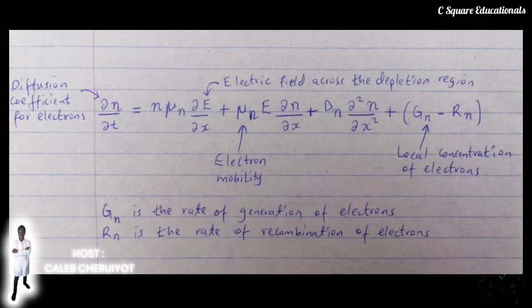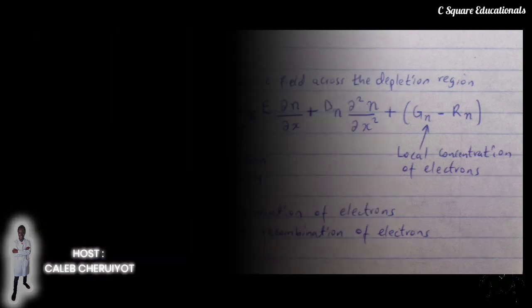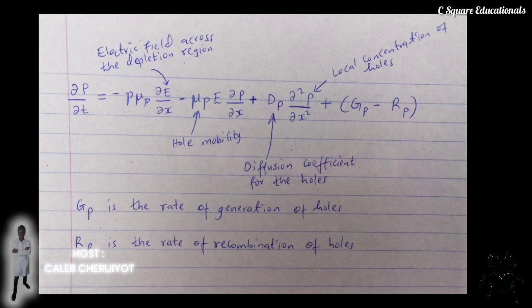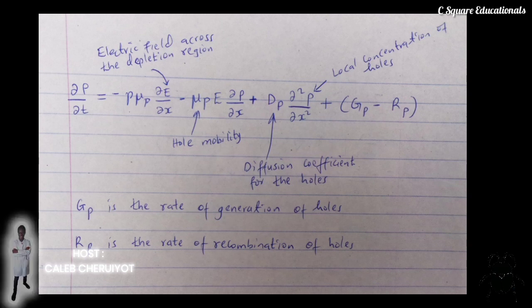Similarly for holes, we have the corresponding equation. Here, p is the local concentration of holes, mu-p is the hole mobility, E is the electric field across the depletion region, D-p is the diffusion coefficient for holes, G-p is the rate of generation of holes, and R-p is the rate of recombination of holes.